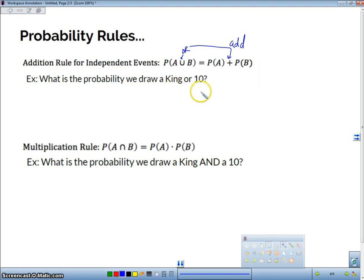What is the probability we draw a king or a 10? Well, in a standard deck of cards, the probability that we draw a king is four kings out of 52 cards. So the probability that we draw a king or a 10 is 4/52 plus 4/52, which is 8 over 52, which simplifies to 2/13.